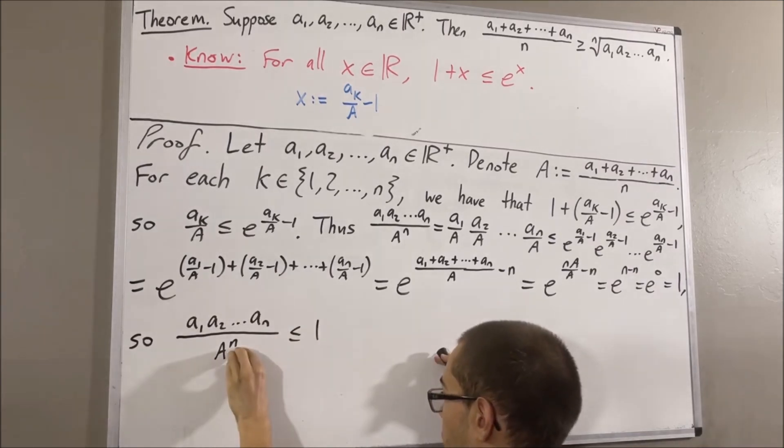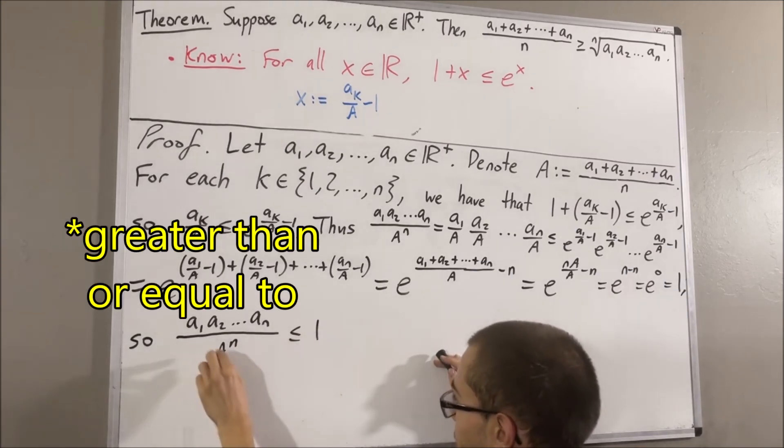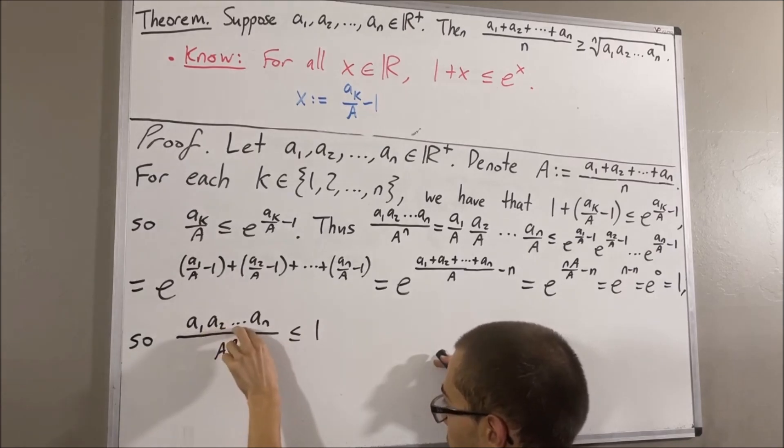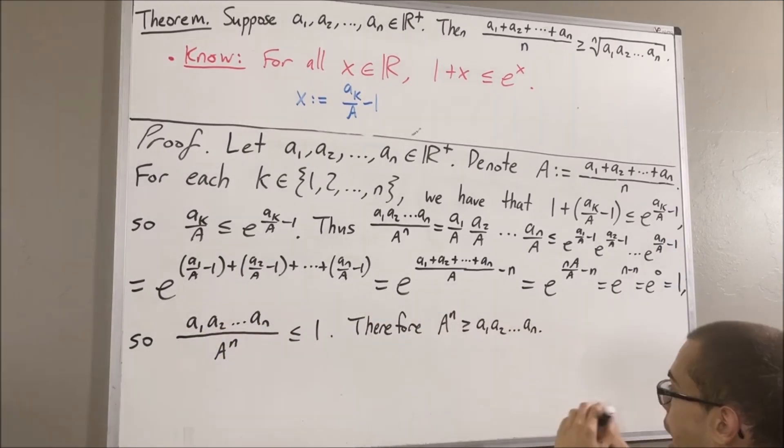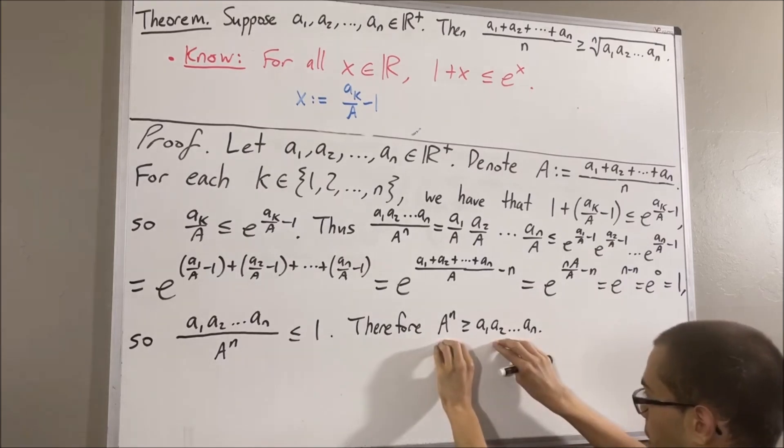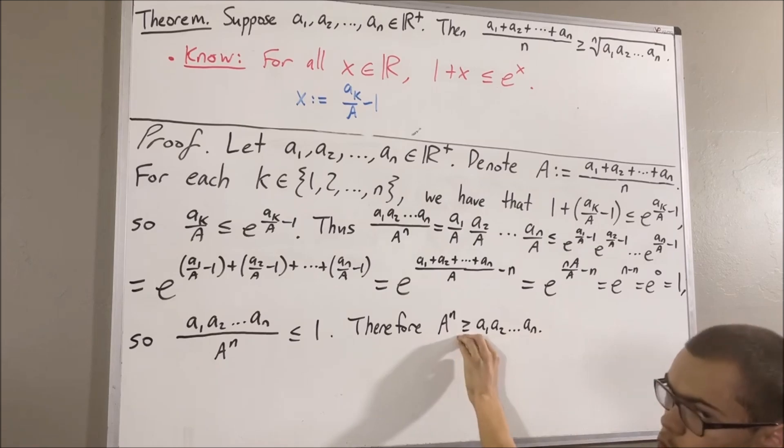Now, since capital A to the power of n is positive, if we multiply that to the other side, we get capital A to the power of n is greater than or equal to a1 times a2 times dot dot dot times an. And then, since both these guys are positive, if we take the nth root of both sides, the sign of the inequality will remain the same.